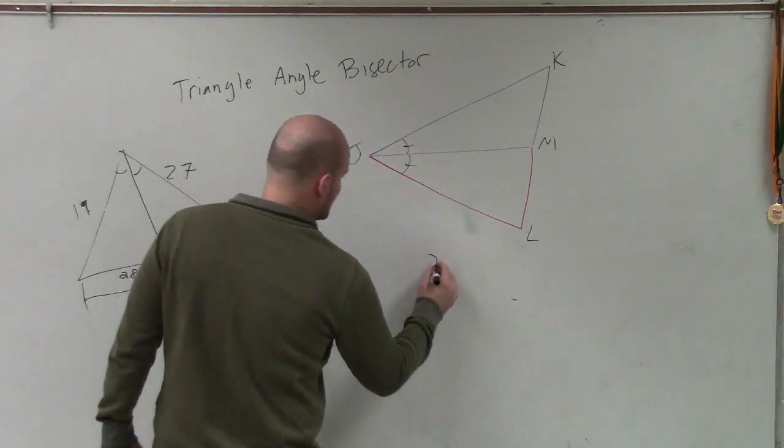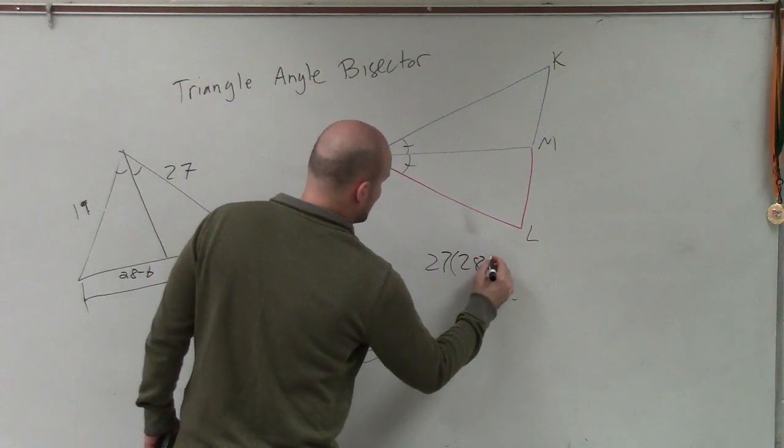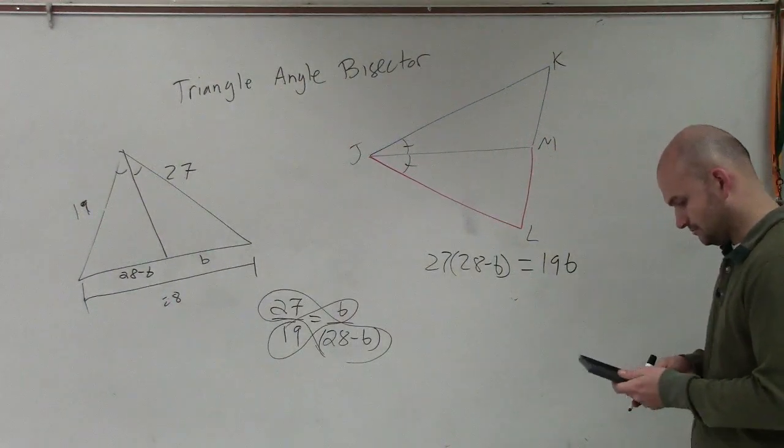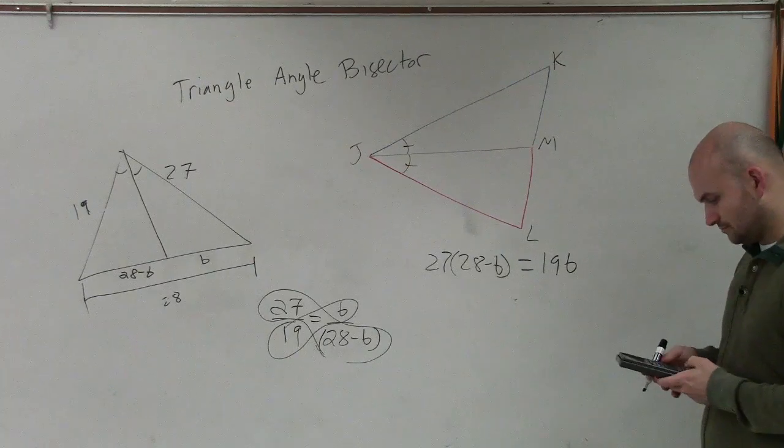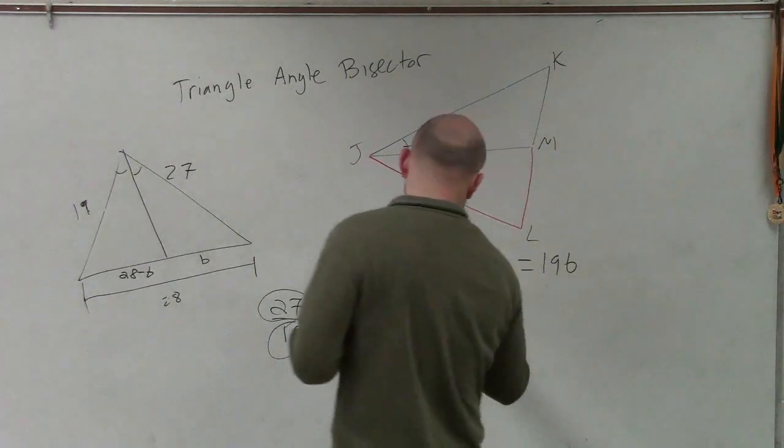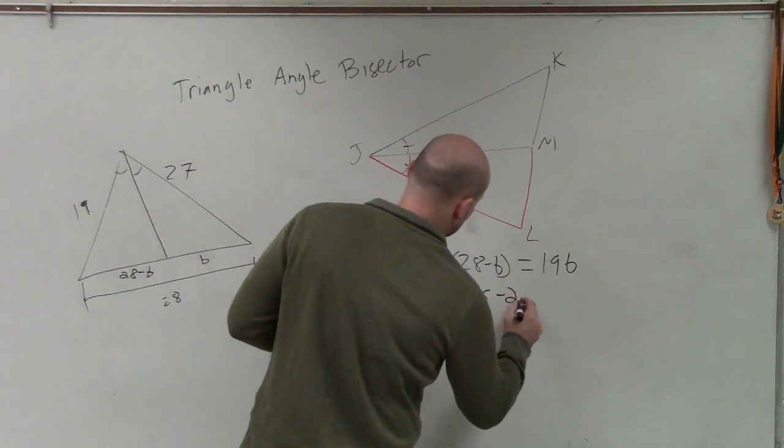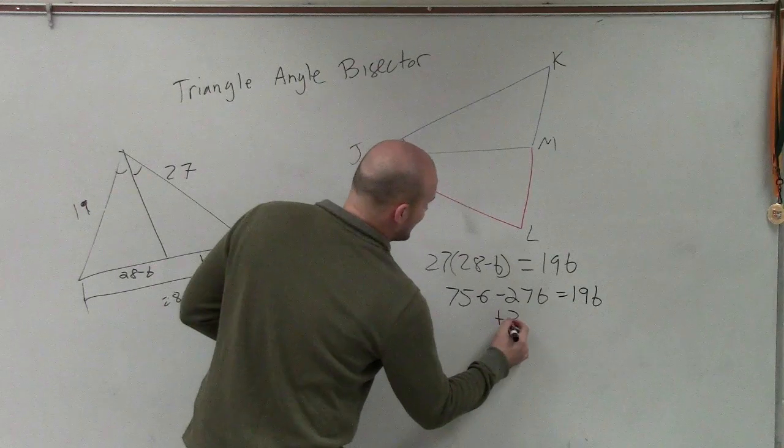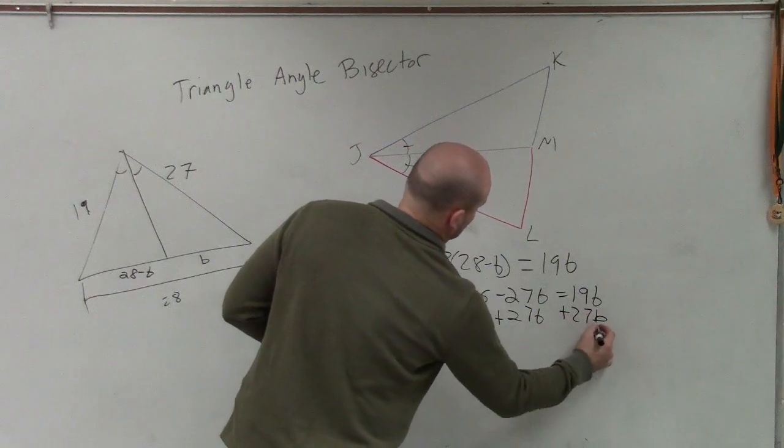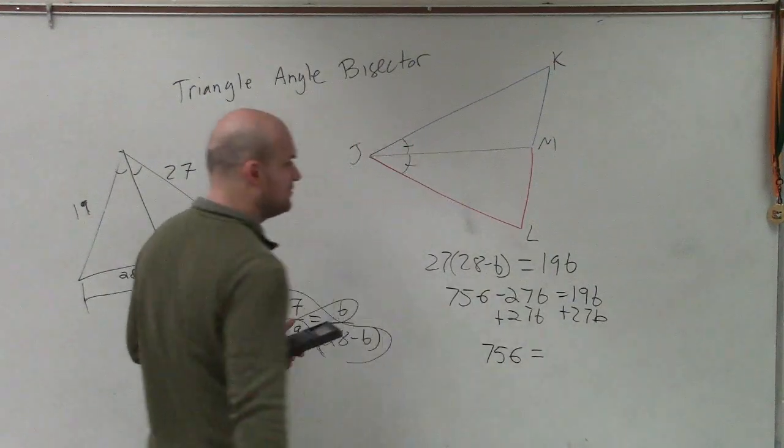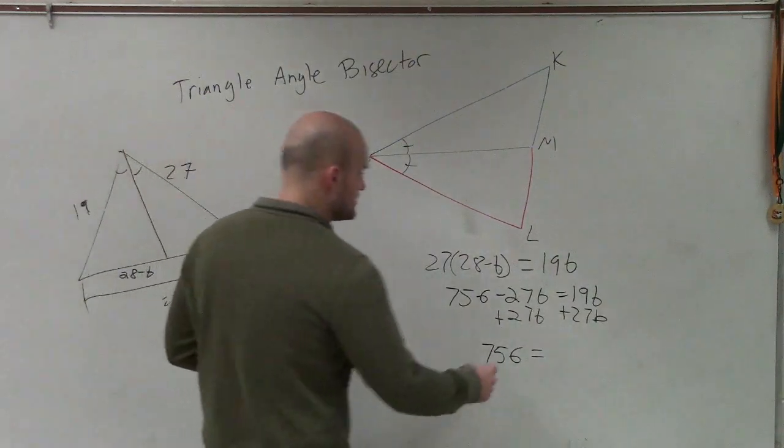So I calculate: 27 times (28 minus B) equals 19 times B. So I do 27 times 28, that's 756, minus 27B equals 19B. So combining terms, that'd be 46B.